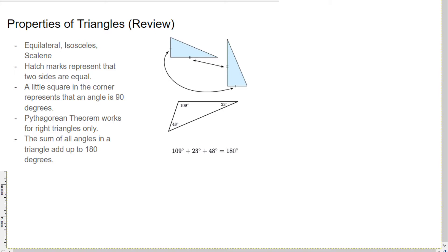And a little square in the corner represents that an angle is 90 degrees. So, if we had like a little square drawn in here, then we would say, oh, it's a 90 degree angle. Cool. It means it's a right triangle.